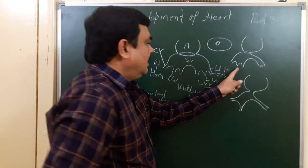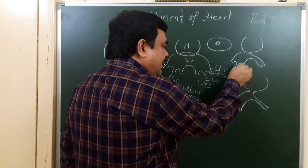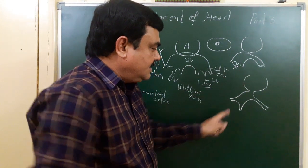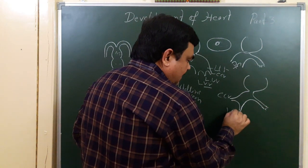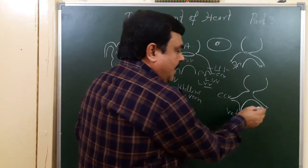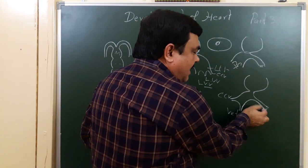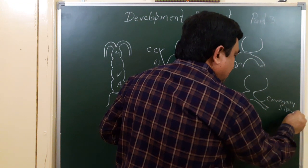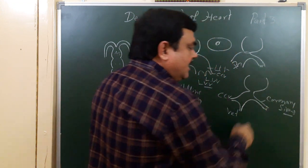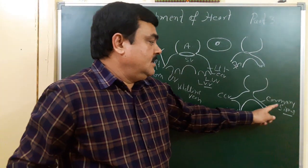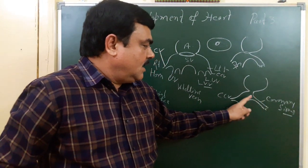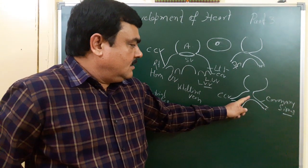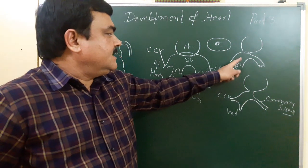On the right side, the right umbilical vein disappears; only the common cardinal vein and vitelline vein remain. This part forms the coronary sinus and oblique vein of the left atrium, and it opens into this right horn of the sinus venosus.